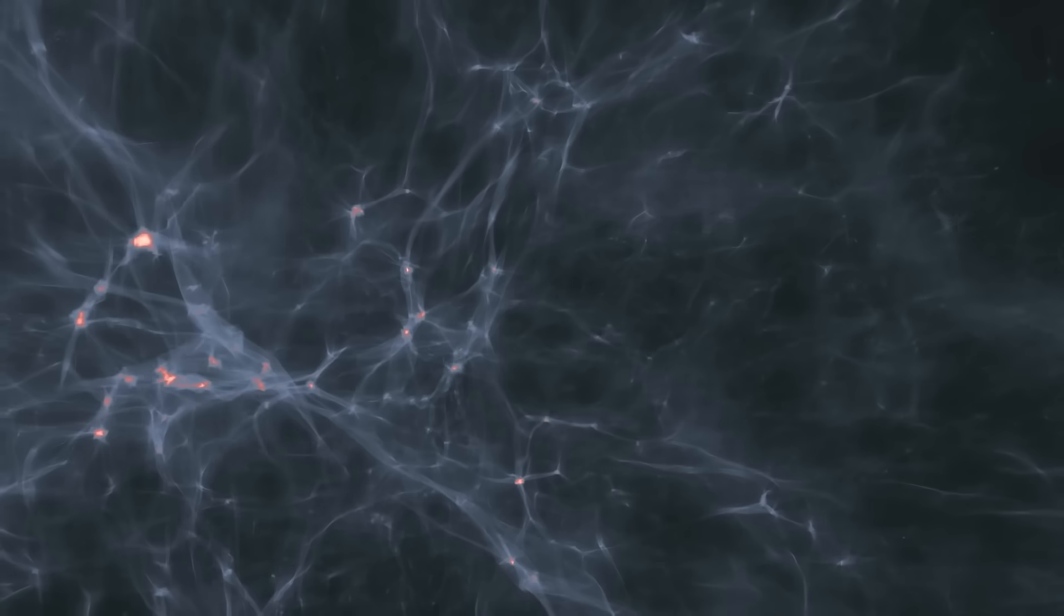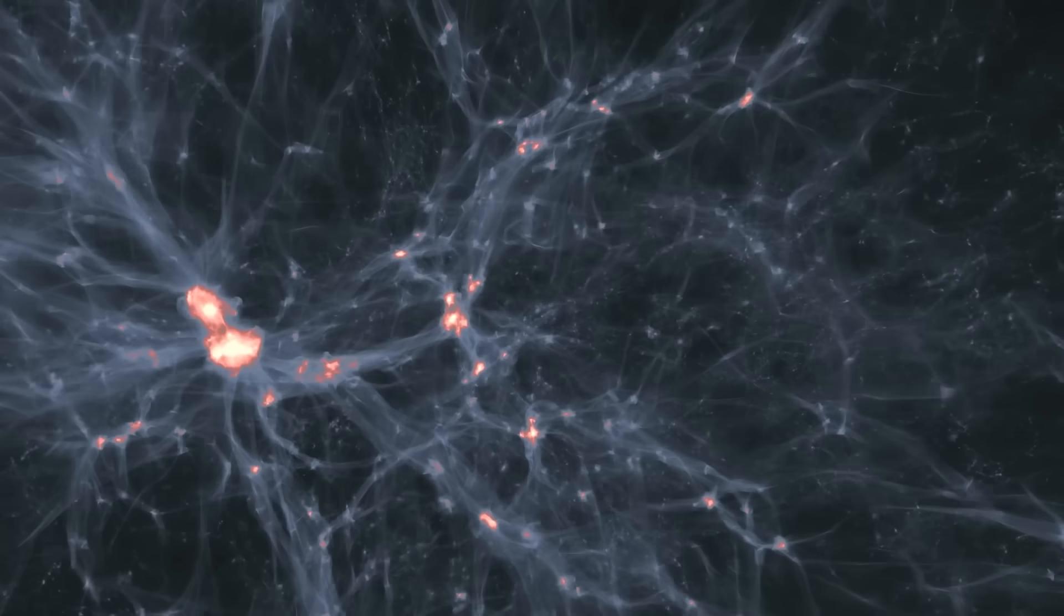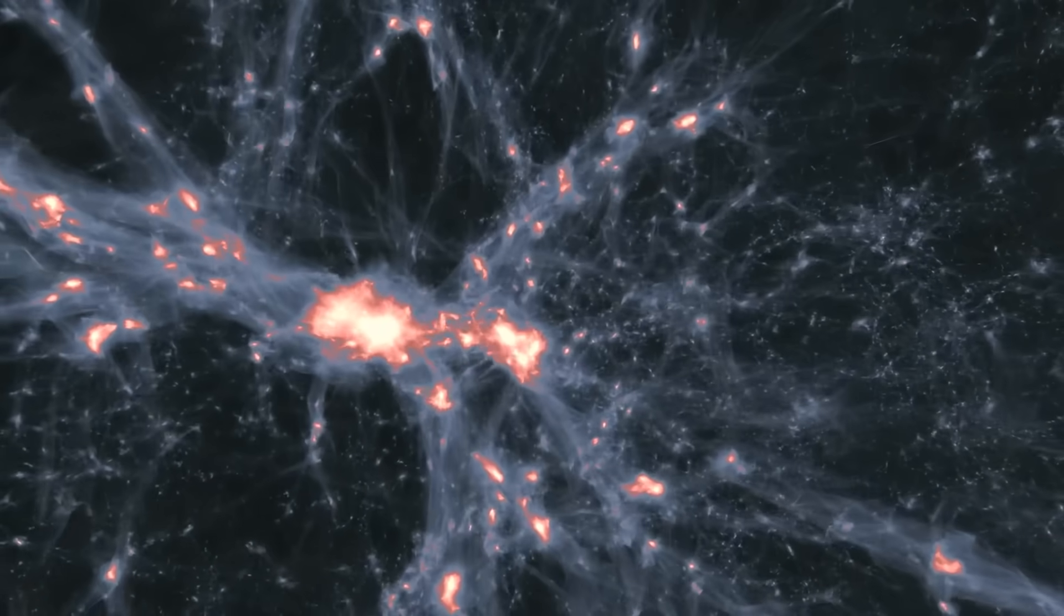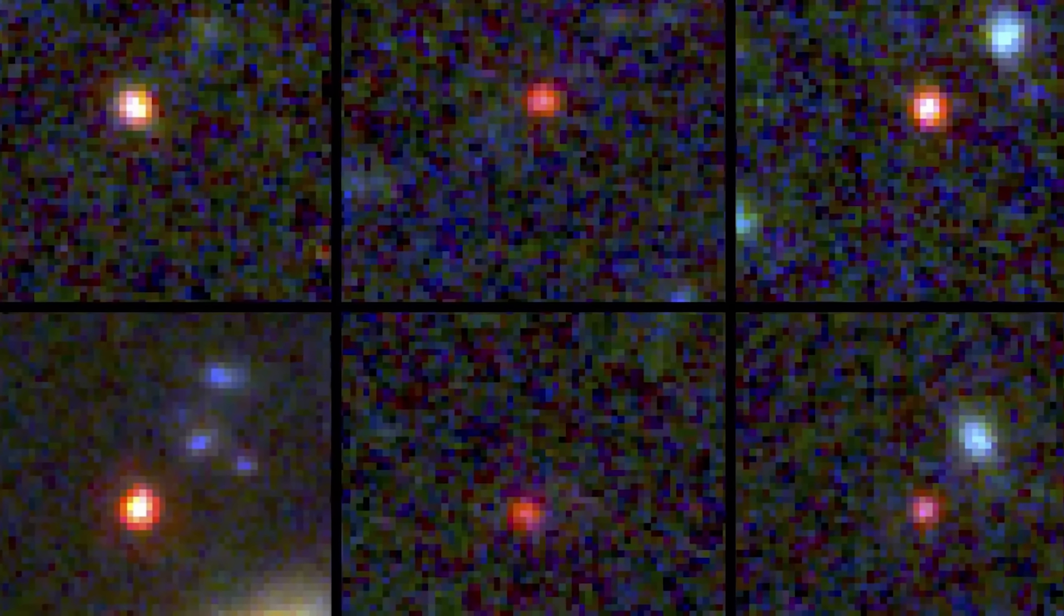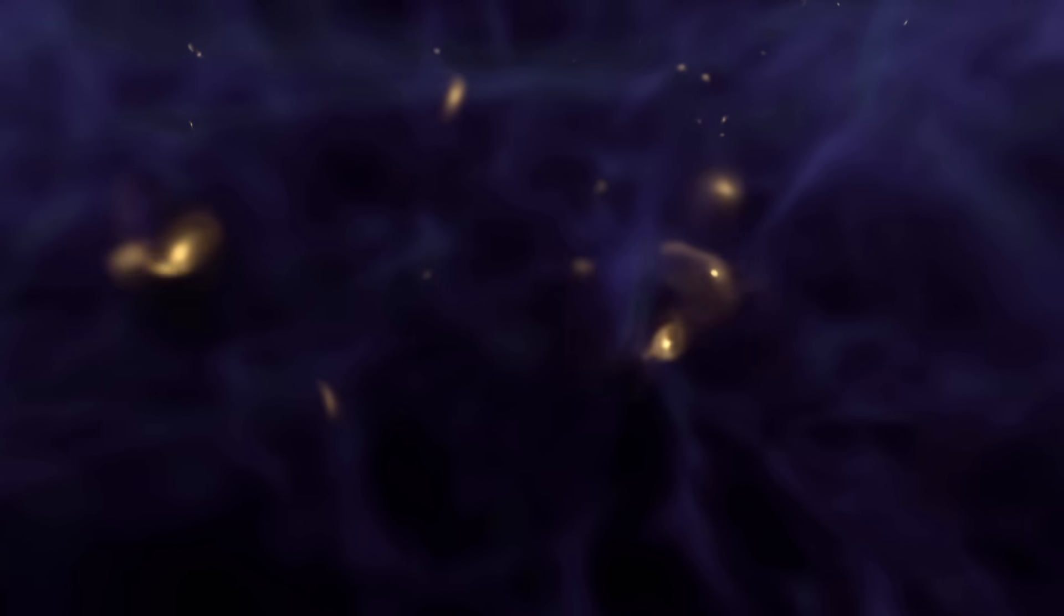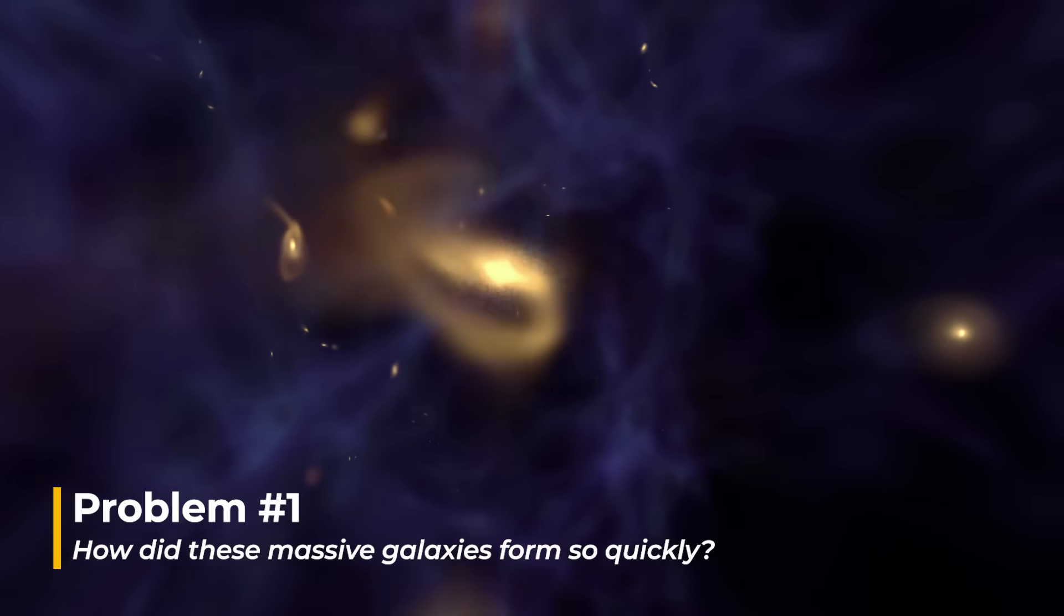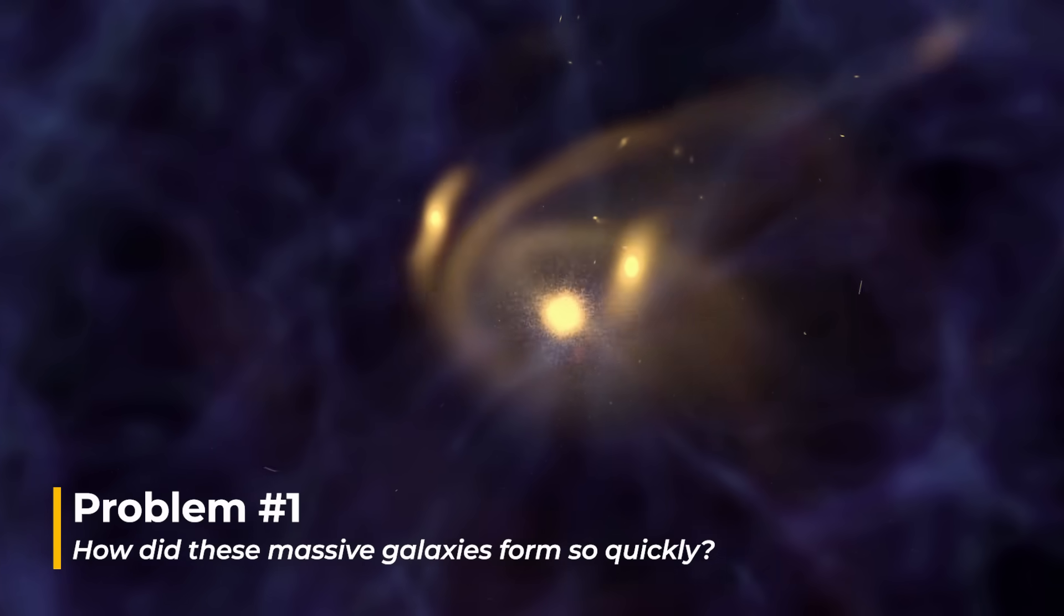According to standard cosmological models, galaxy formation in the early universe should have been a slow and gradual process. These models suggest that early galaxies could convert only up to 20% of the gas in their dark matter halos into stars. But the ultramassive galaxies observed by Webb seem to have defied those rules. They managed to turn much more of their gas into stars, and did so very quickly. This unexpected efficiency has become known as the efficiency paradox. To explain how these galaxies grew so large so fast, scientists are now rethinking many of the processes believed to govern the early universe.